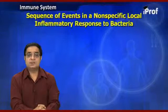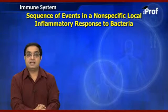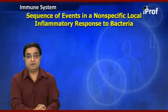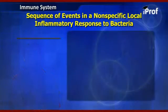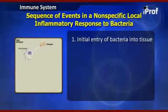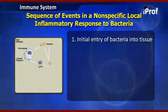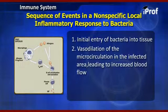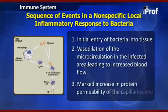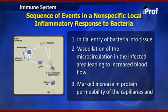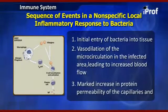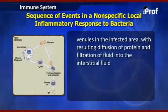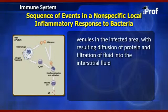Now let us see the sequence of events in a non-specific local inflammatory response to bacteria. First, there is entry of bacteria into the tissues. Second, vasodilation of microcirculation in the infected area leading to increased blood flow. Third, there is a marked increase in protein permeability of the capillaries and venules in the infected area, with resulting diffusion of proteins and filtration of fluid into the interstitial fluid.